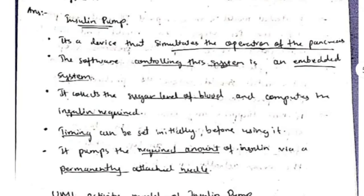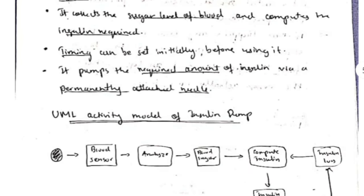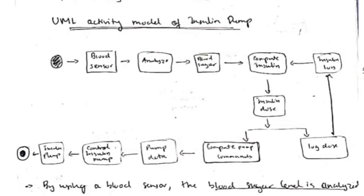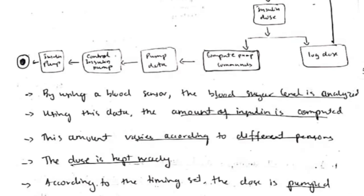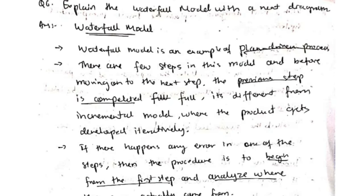The insulin pump control system simulates the operation of the pancreas — it pumps insulin into the patient's body. First, it calculates the sugar level inside the blood and how much insulin is required. After calculating that, the appropriate insulin dose is delivered into the patient's body.